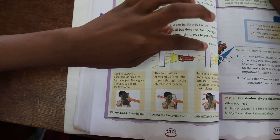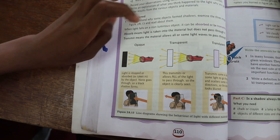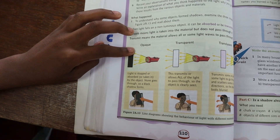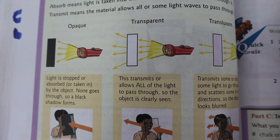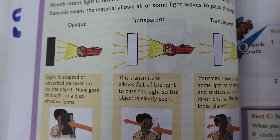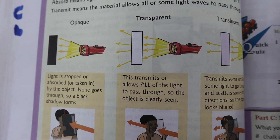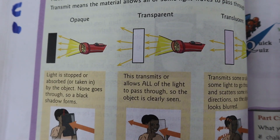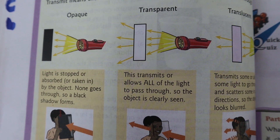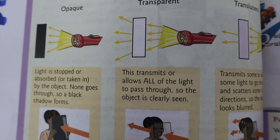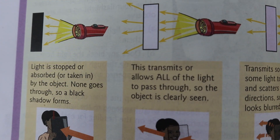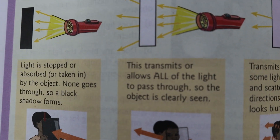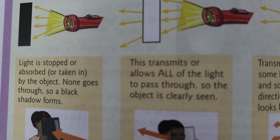Transparent, translucent, and opaque. So now we look at transparent. This transmits or allows all of the light to pass through, so the object is clearly seen.